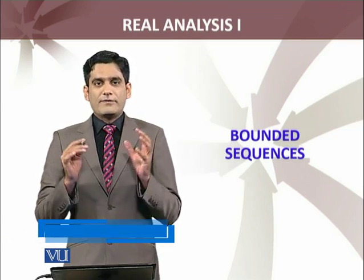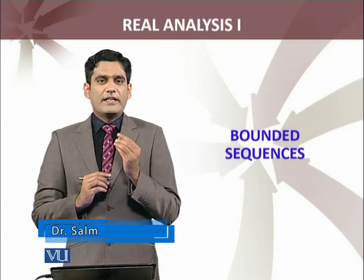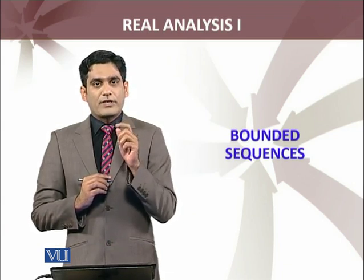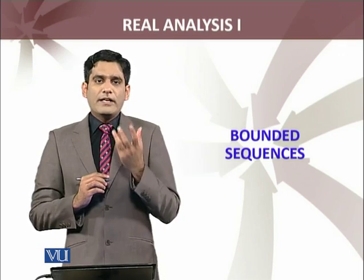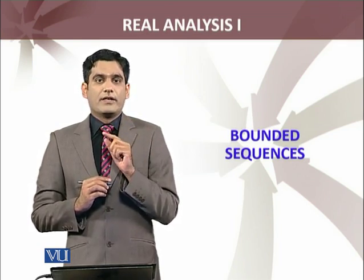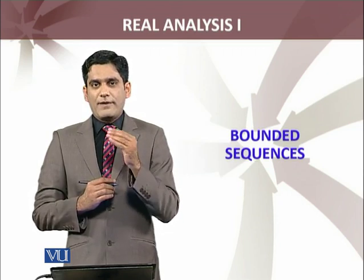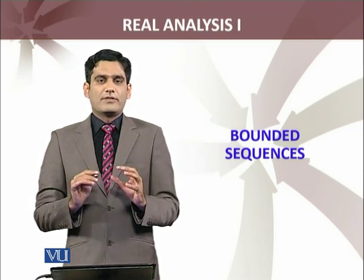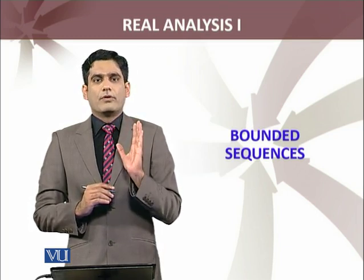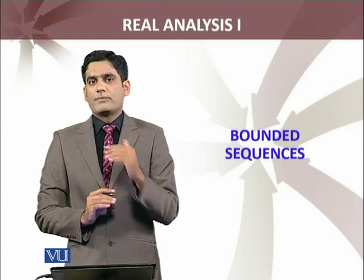Boundedness is a much more relaxed condition than the convergent sequence. For a sequence to be convergent, you have to find out the real number L which it converges to, for every epsilon given. Now if you are given a sequence, how do you find that number L? In the next modules we will discuss results which will tell us that a sequence is convergent or divergent, but we will not necessarily know the limit.